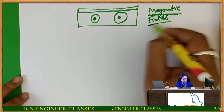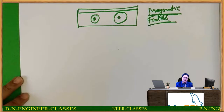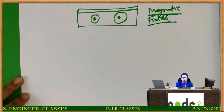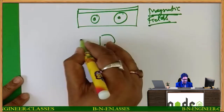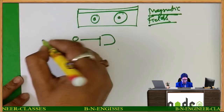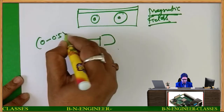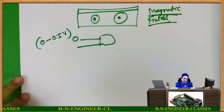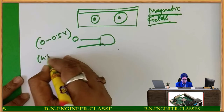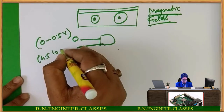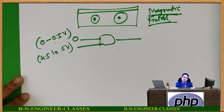So this was the physical interpretation of 0 and 1. Wherever I want to apply 0 on a logic gate, that means I am applying 0 to 0.5 volts. When I have to apply 1, then I am applying 4.5 to 5 volts. So this is the physical interpretation of 0 and 1.